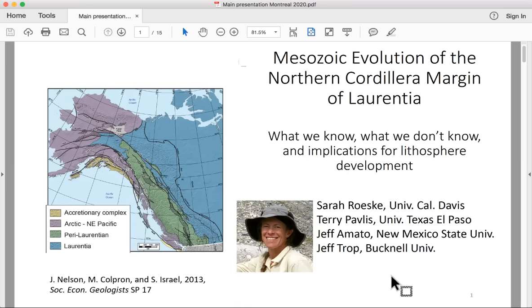In this talk, the Cordillera Margin that I'm referring to is from southern British Columbia into Alaska, and the terrains highlighted in purple, green, and yellow that were juxtaposed against Laurentia here in blue.